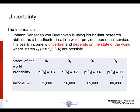Let's begin with the problem. Johann Sebastian von Beethoven is using his brilliant research abilities as a headhunter in a firm which provides personnel service. His yearly income is uncertain and depends on the state of the world, where states are represented by theta subscript k, where k equals 1, 2, 3, 4. On the first row of our table, we have the states of the world, followed on the second row by the probability associated with each state occurring, and finally the wealth associated with each state.